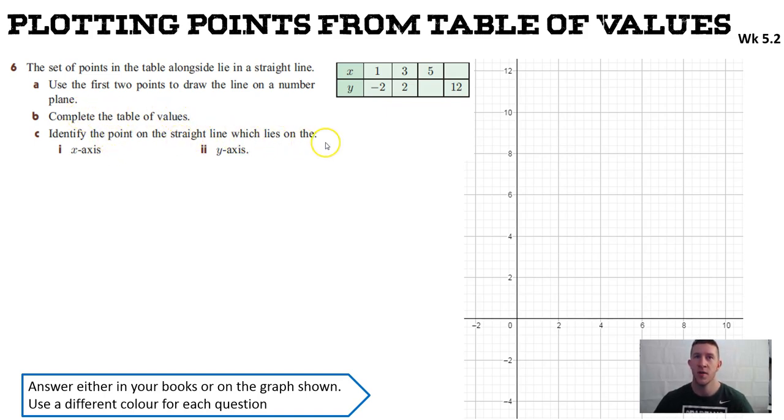Identify the point on the straight line which lies on the x and y axis. We're expecting that once we draw this line it will cross the x axis and the y axis at some point. And they want you to identify which point that is.